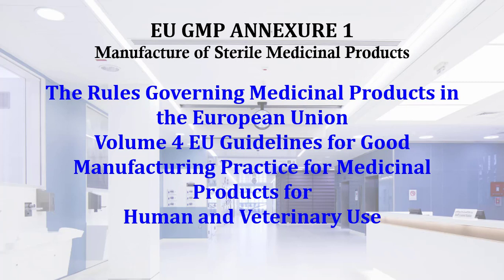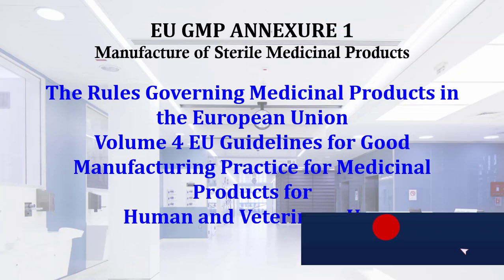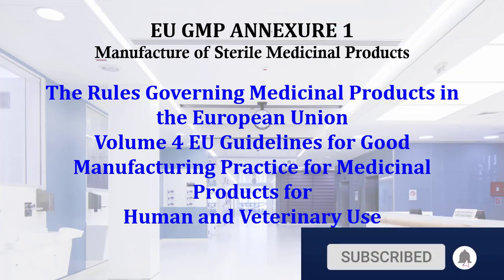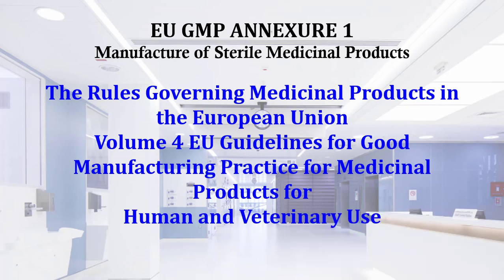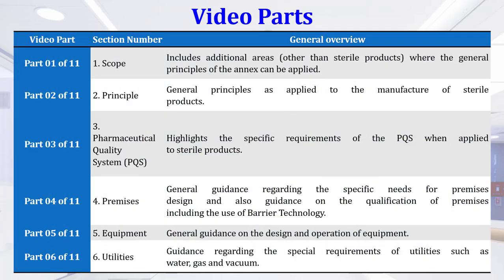EU GMP Annex 1 - Manufacture of Sterile Medicinal Products comes from the rules governing medicinal products in the European Union, Volume 4: EU Guidelines for Good Manufacturing Practices for medicinal products for human and veterinary use. In this video series we will discuss a number of topics which cover the complete EU GMP Annex 1, and in this video we will discuss the scope.